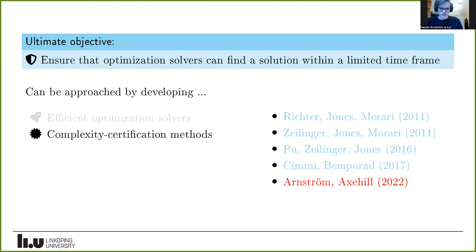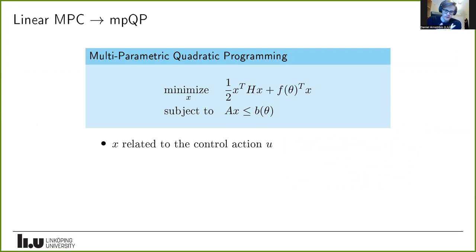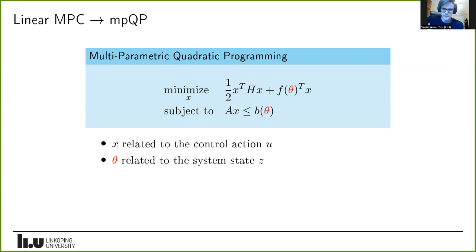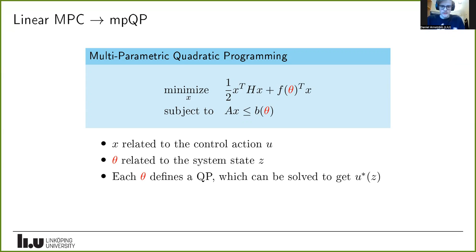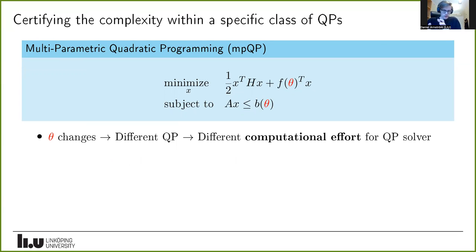Let's make things more concrete. It's a well-known result that linear MPC problems can be recast as a multi-parametric quadratic program: an optimization problem with a quadratic objective and affine constraints. The decision variable x is related to the control action, and the parameter theta enters the linear term of the objective and the right-hand side of constraints — this parameter is related to the system state. Each different parameter defines a different QP to solve for the optimal control action. When the state changes, we solve a different QP, which may require different computational effort.